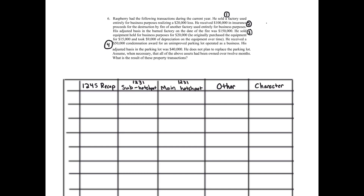This one isn't too bad — only four transactions. But remember, it's important to use the chart. In the last problem we didn't really have Section 1245 issues, but now we get 1245, so we've got to worry about that.